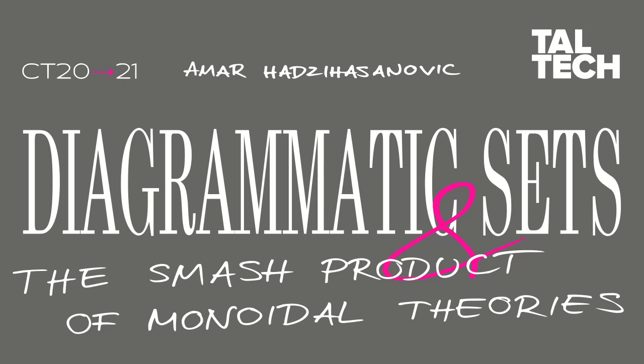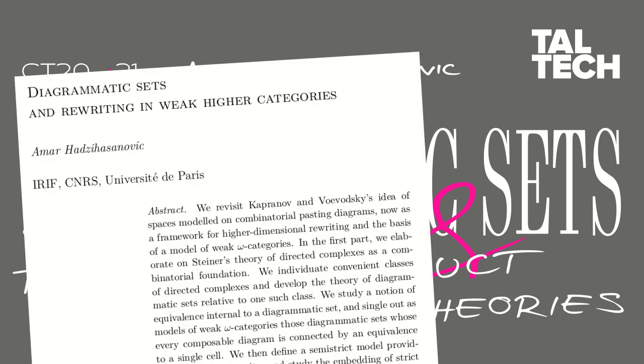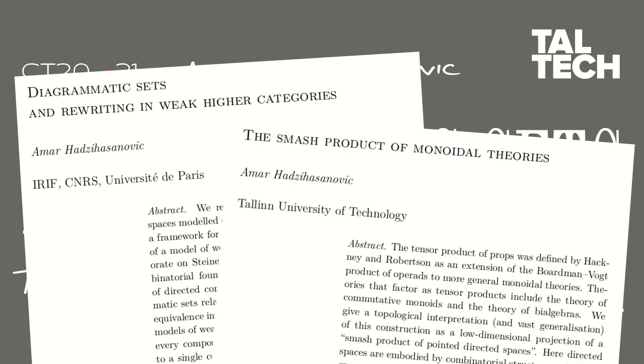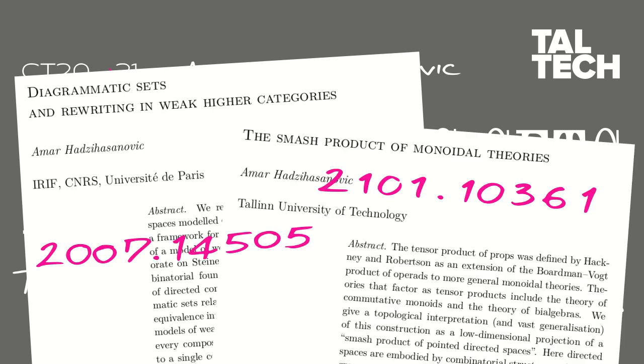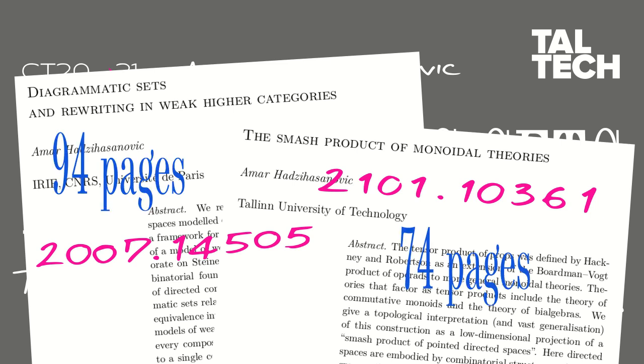In this video, I will give an overview of two papers. The first is called Diagrammatic Sets and Rewriting in Weak Higher Categories. The second is called a Smash Product for Monadic Theories. You can find both in the archive. At 94 and 74 pages respectively, they are quite long, so I won't go into much detail.